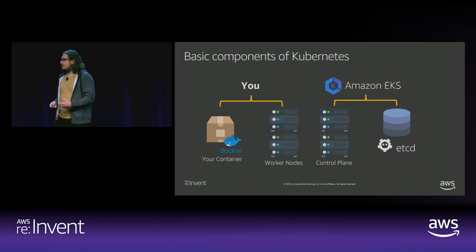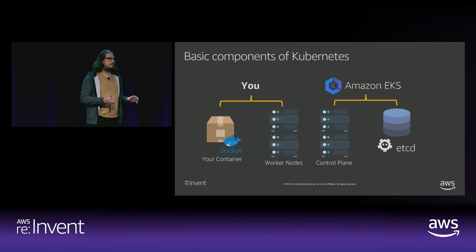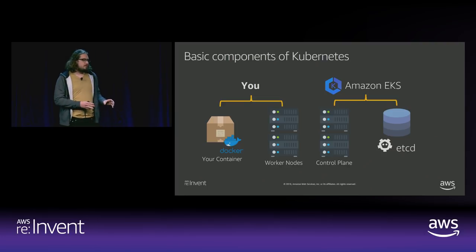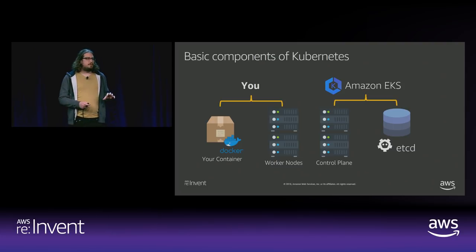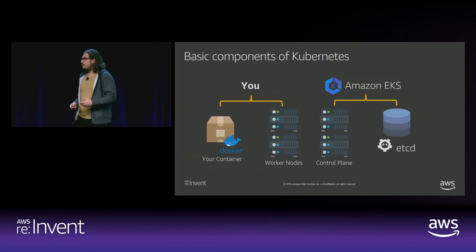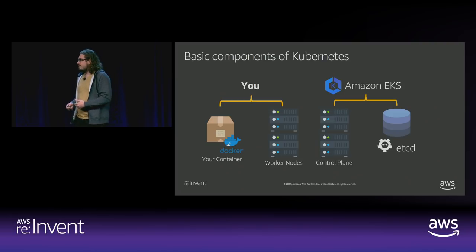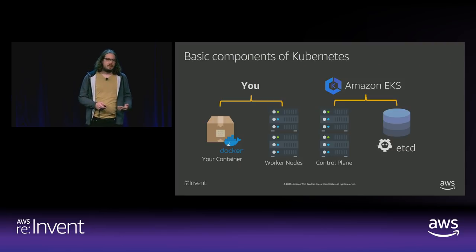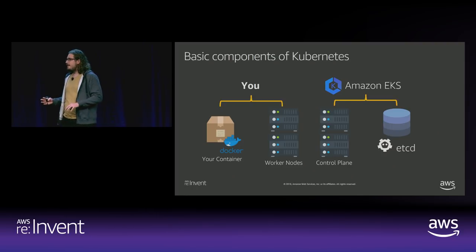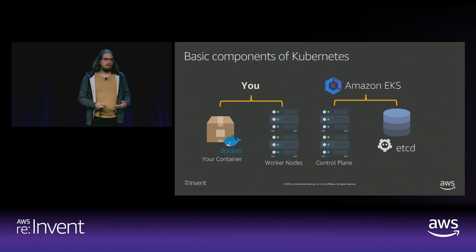You have etcd, which is also part of the control plane, but which keeps track of the state of everything going on inside your cluster. I've grouped these into two categories: the 'you' category and the Amazon EKS category. With Amazon EKS, you are responsible for optimizing your container and your worker nodes, whereas the Amazon EKS team is responsible for optimizing everything on the control plane and etcd side to keep that high performance for you.